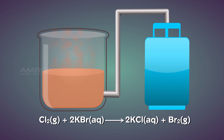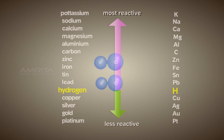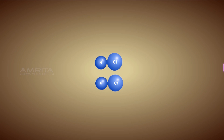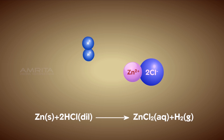In the case of metals which are more reactive than hydrogen, they displace hydrogen from dilute acids. When zinc metal is placed in dilute sulphuric acid, zinc metal displaces hydrogen ions (H⁺) as hydrogen gas.